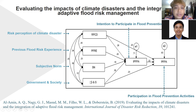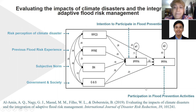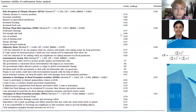One study examines the impact of climate disaster on adaptive flood risk management. This latent is represented by several different indicators, and you can see the beta coefficients showing causal relationships. The four exogenous variables are: risk perception of climate disaster, previous flood risk experience, subjective norms, and government and society.